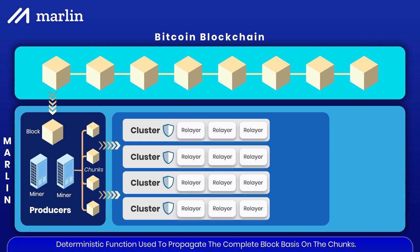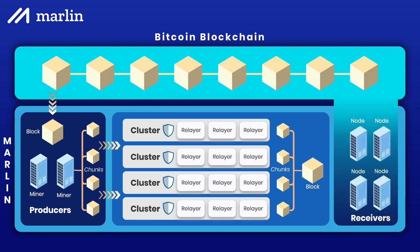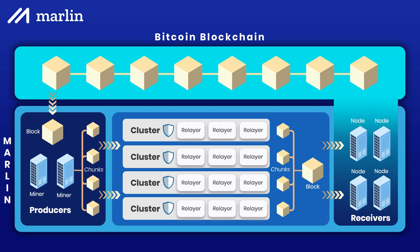A deterministic function based on block hash and chunk IDs is used to determine which clusters should be used to propagate the complete block. Then the block is received by receivers. Receiver nodes are the set of nodes who wish to receive blocks as fast as possible to build on top of the latest blocks, ensuring they are not building on older blocks which may be orphaned. Receivers can be other miners, exchanges, wallets, or individuals who benefit from receiving blocks as soon as possible. A receiver needs to pay a subscription fee to the protocol to join the receiver set. Once subscribed, a receiver connects to the relayers, initially joining all clusters via random relayer selection, and then choosing better-performing relayers over time.